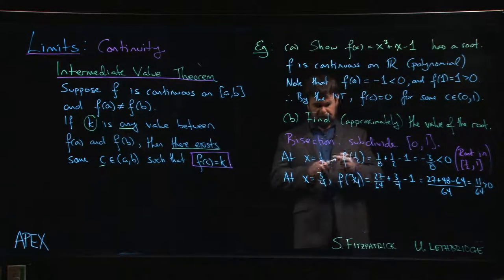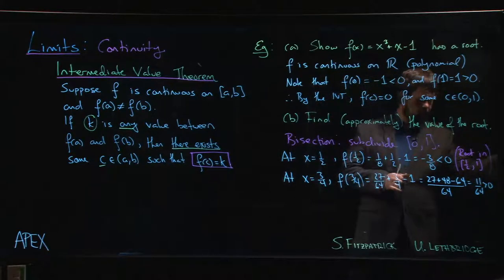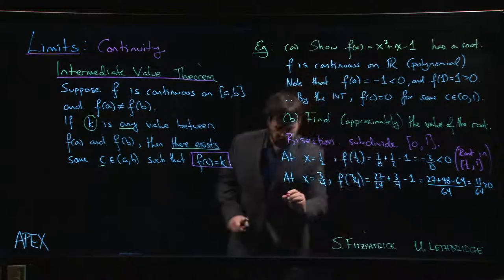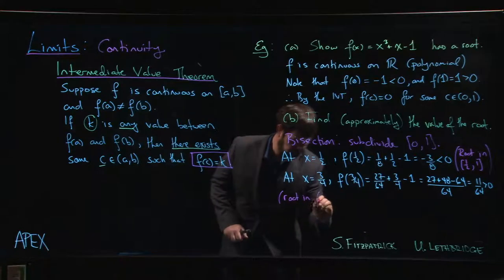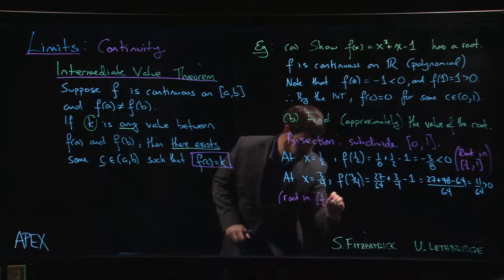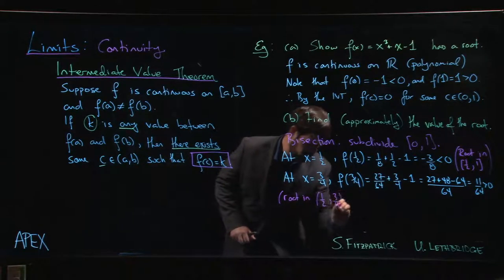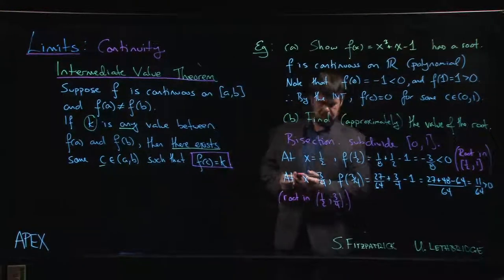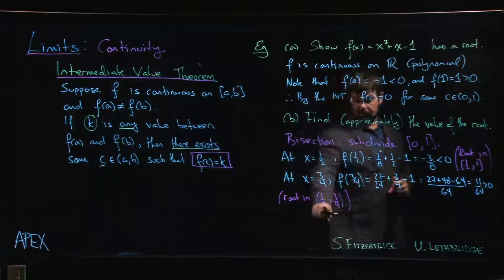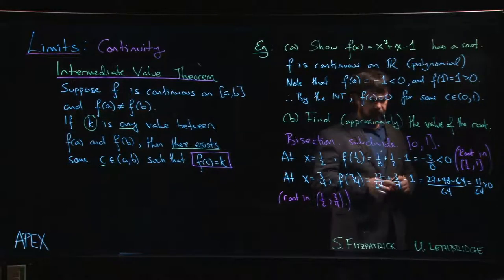So because it's positive, now we know that our root is somewhere between one-half and three-quarters. Because the function is negative at one-half, it's positive at three-quarters.